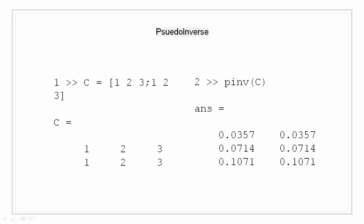Pseudo-inverse. As we know, inverse and determinants are applicable only to square matrices. So what about rectangular matrices? Technically, they do not have an inverse or determinant, because at least one of the equations — Ax = I or xA = I — does not have a solution for a rectangular matrix. A partial replacement for the inverse is provided by the Moore-Penrose pseudo-inverse, which is computed by the pinv function. On the left, we have defined a 2 by 3 matrix C with values 1 to 3 and 1 to 3. On the right, I have computed the pseudo-inverse of that same matrix C and obtained the resulting answer.